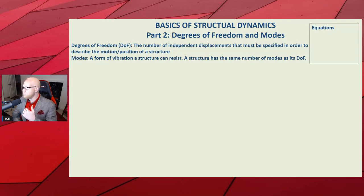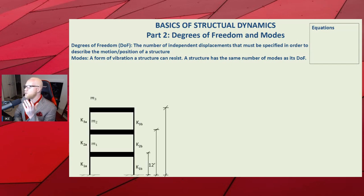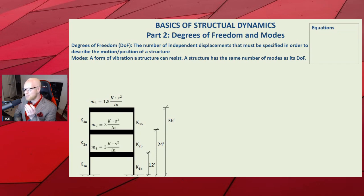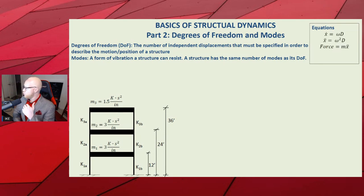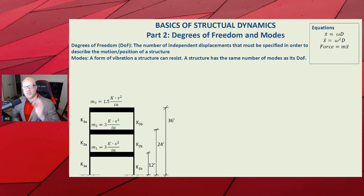This is just to put a capstone on part one, which talked about how stiffness and frequency are related together with mass. Let's bring in the equations we used before and look at this three degree of freedom object. x-dot, the first derivative of position, is the velocity, equal to the frequency times the displacement. Watch the first video for the full derivation.